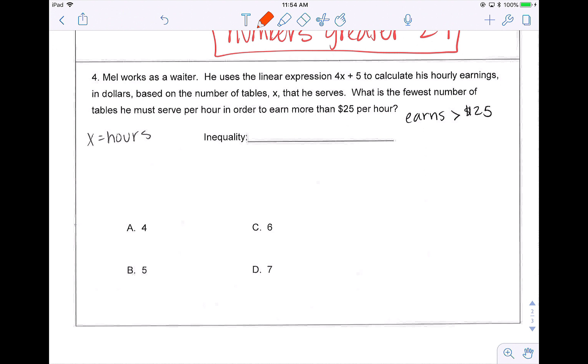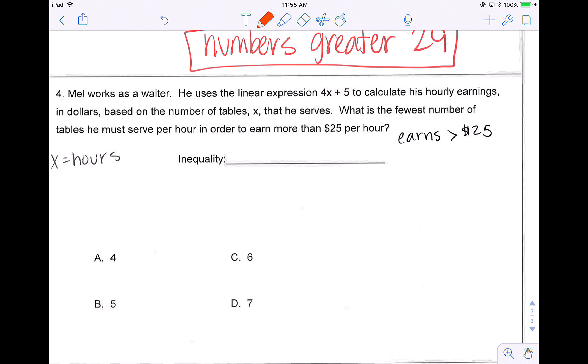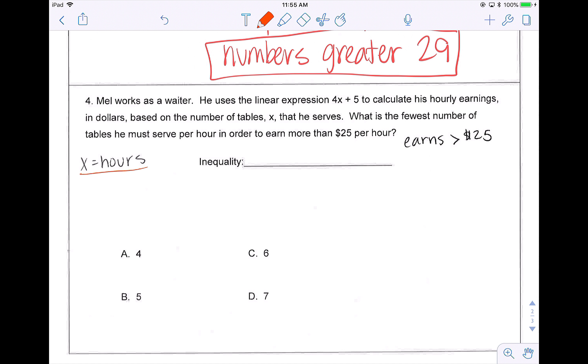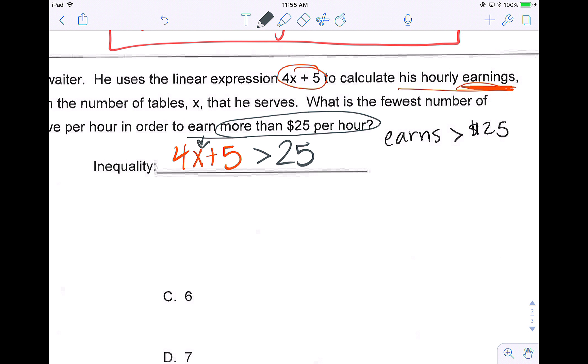And the last problem, problem four, Mel works as a waiter. He uses the linear expression 4X plus five to calculate his hourly earnings in dollars based on the number of tables X that he serves. What is the fewest number of tables he must serve per hour in order to earn more than $25 per hour? So we are looking for what he earns to be greater than $25. We know that X is hours. We have this linear expression for his earnings. So instead of earns, we're going to use that expression 4X plus five. And that's going to be greater than what he wants to earn, more than $25.